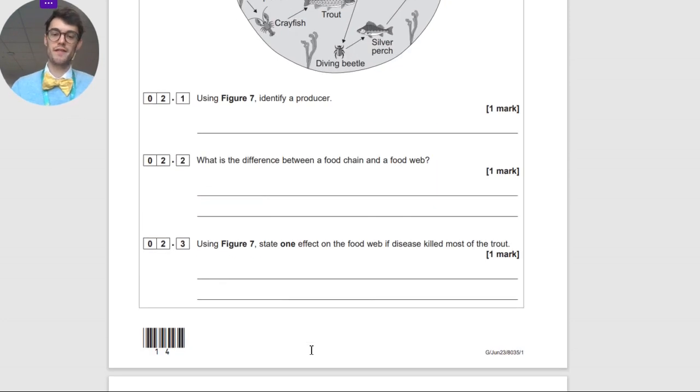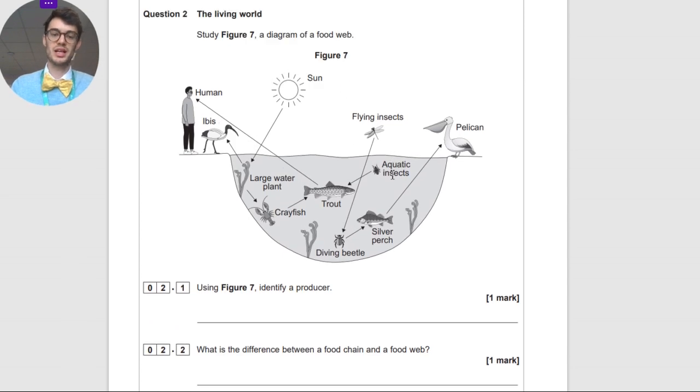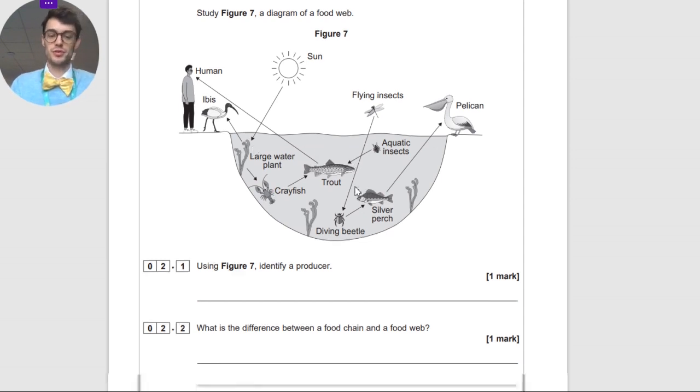Figure seven, state one effect of a food web if disease killed most of the trout. Without the trout, you'd have more aquatic insects because they wouldn't have any predators. You'd have more crayfish. You'd have fewer humans, you can argue, because we'd have less food to eat.